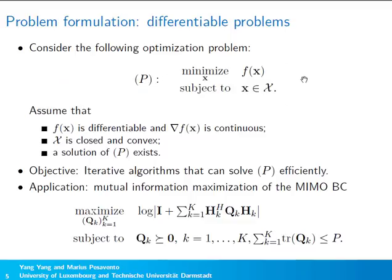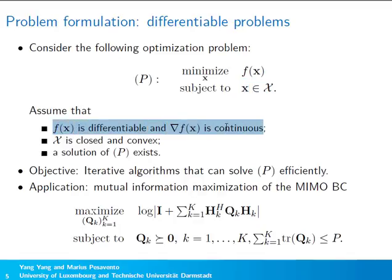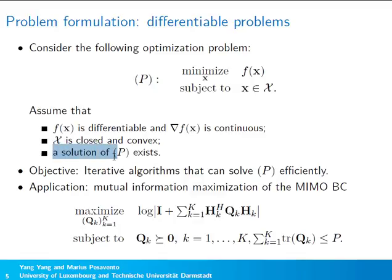This is the general formulation of an optimization problem we will consider. There is an objective function f(x) that we would like to minimize, where x is the optimization variable that always stays in a constraint set. We assume the objective function is differentiable with a continuous gradient, and the constraint set is closed and convex. We do not assume f(x) is convex, so in general this is a non-convex optimization problem.